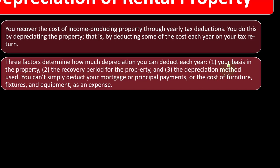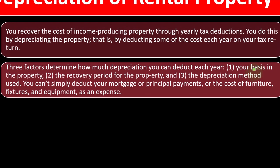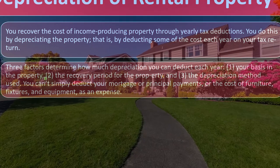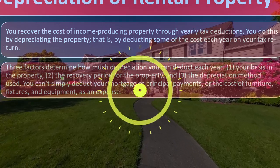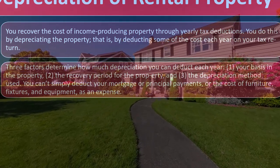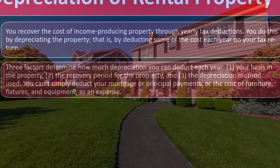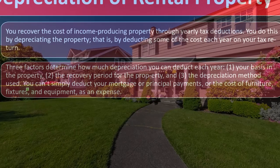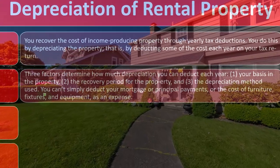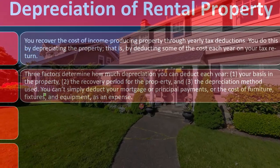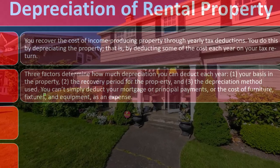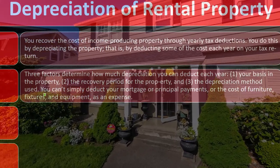Your basis in the property is essentially the adjusted cost — the items you must include in the property's cost that you can't expense immediately but must depreciate over time. The recovery period is the number of years over which you depreciate it. The depreciation method is whether you use straight-line, which spreads even depreciation over the years, or an accelerated method like double-declining, which concentrates more depreciation in the earlier years.